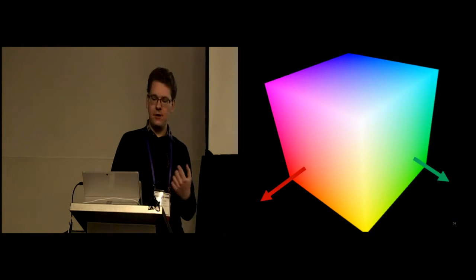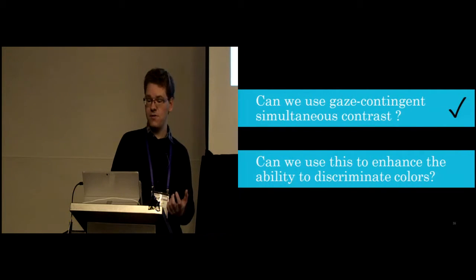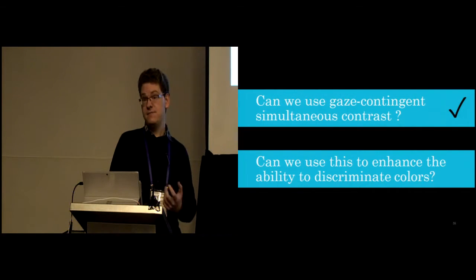So this means that we can influence the perception of color patches on the screen by changing their surround. We can do this in different areas. And this means that we can potentially enhance or extend the gamut of a display device using this kind of gaze-contingent technique. So the answer to the first question is, can we employ this gaze-contingent simultaneous contrast? Yes, we can do this.